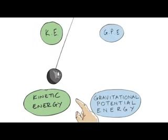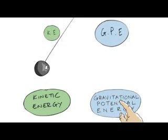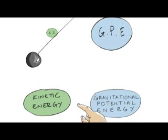As it swings back up higher, it gains gravitational potential energy again. But also, as it swings up, it slows down and loses kinetic energy.